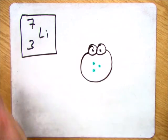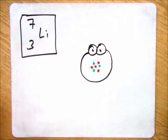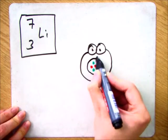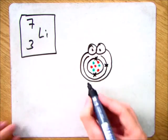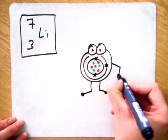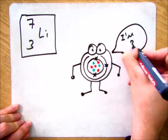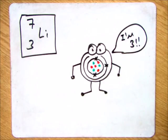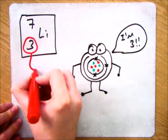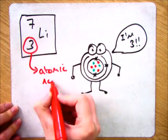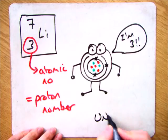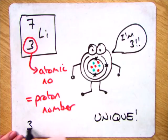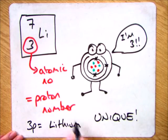So there are two numbers on the periodic table, as I'm sure you're aware. One of them is the atomic number, one of them is the atomic mass. Now, the mass number can actually change — that's when you get different isotopes, which we'll look at in a different video. But the bottom number, the atomic number, is the proton number, and that is unique.